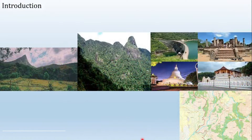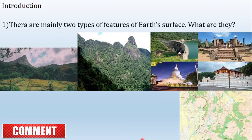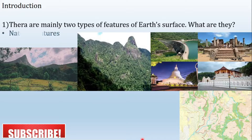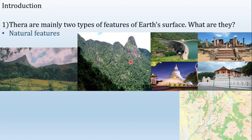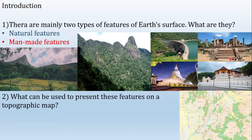Now let's move on to learn about the introduction. The first question: there are mainly two types of features of the Earth's surface — what are they? The first one: natural features. These pictures clearly show you what natural features are — a mountain and a mountain range. The second one: man-made features. These four pictures give you a clear understanding about man-made features — all structures made by humans on the surface of the Earth. What can be used to present these features on a topographic map? We can use colors, letters, and symbols.